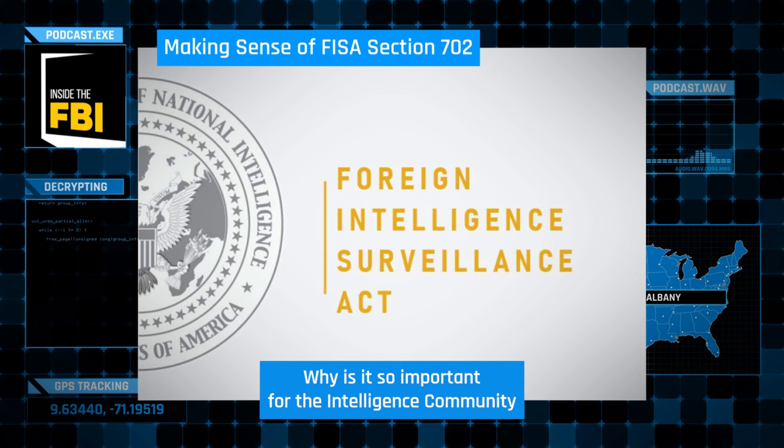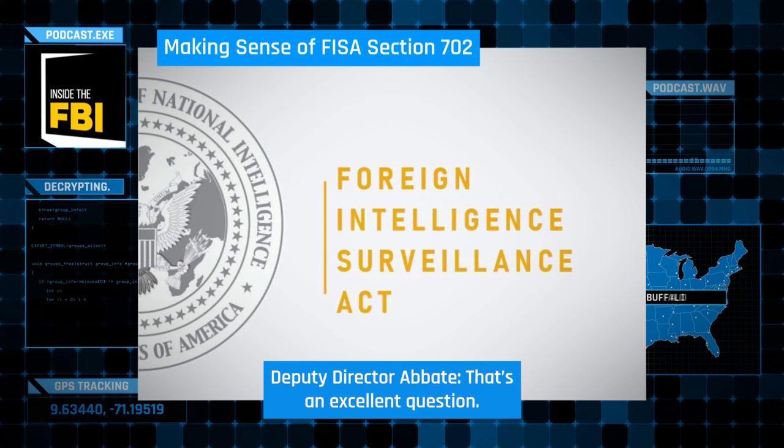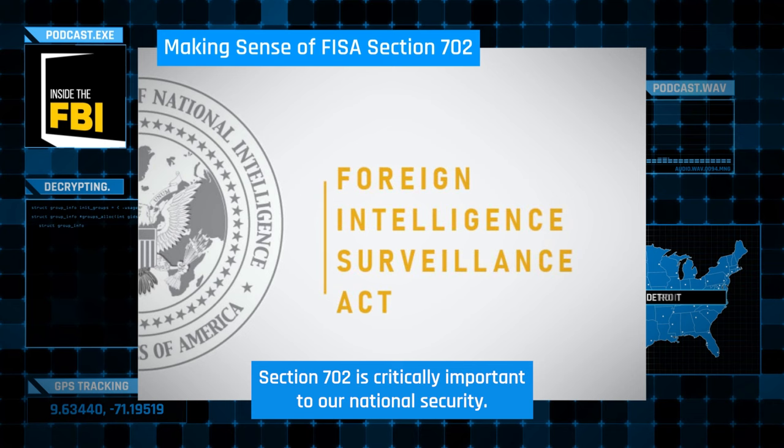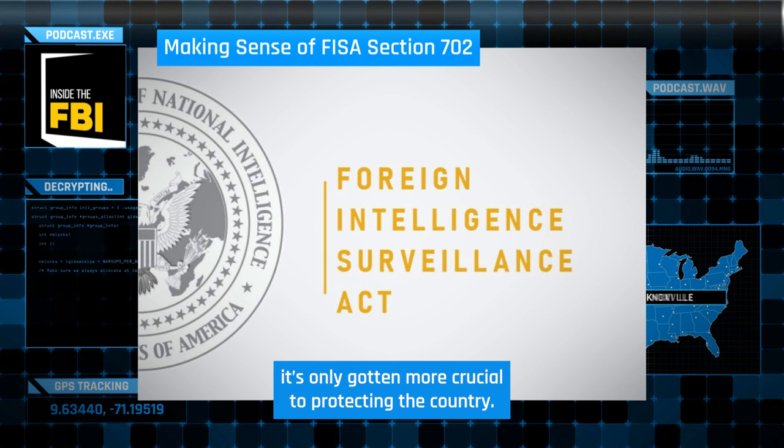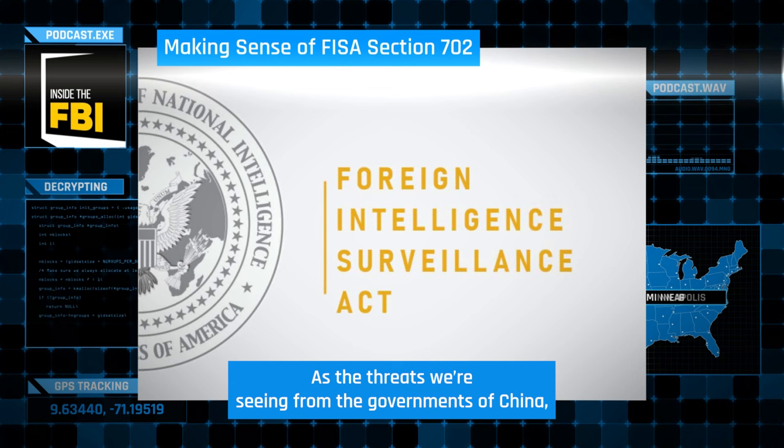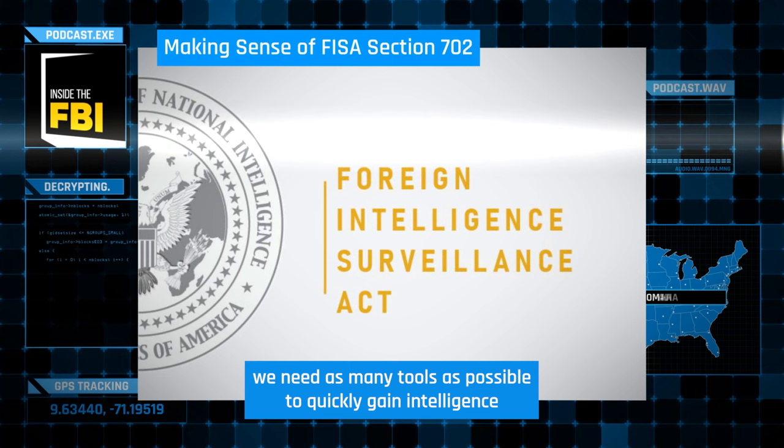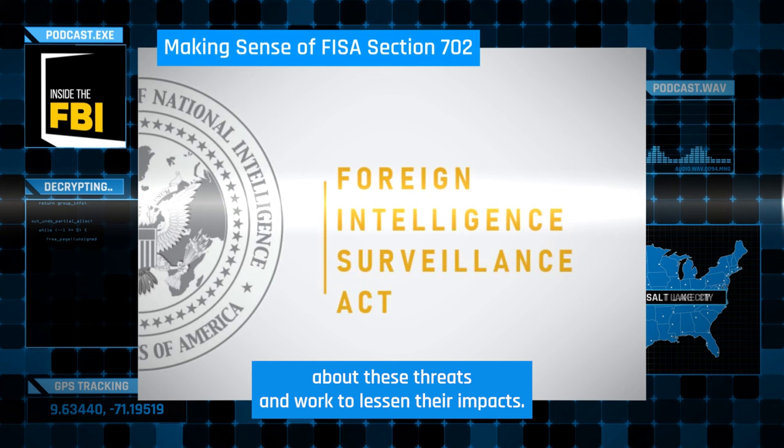Section 702 is critically important to our national security. As technology has evolved and threats to Americans have increased, it's only gotten more crucial to protecting the country. As the threats we're seeing from the governments of China, Russia, Iran, and all over the world change and get increasingly complex, we need as many tools as possible to quickly gain intelligence about these threats and work to lessen their impacts.